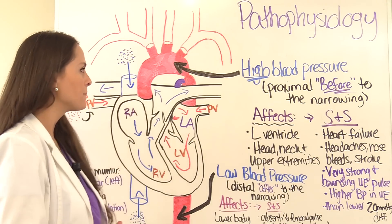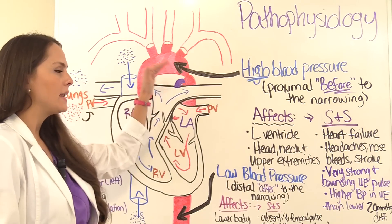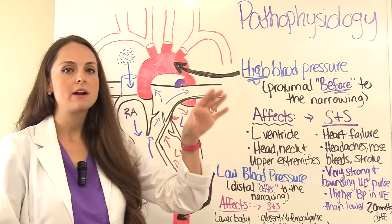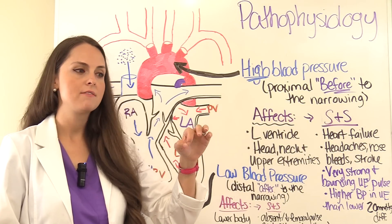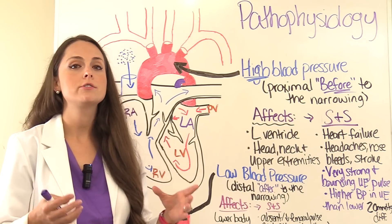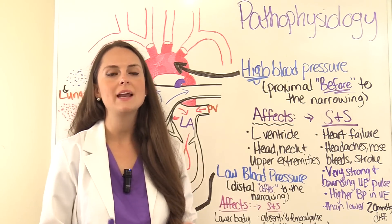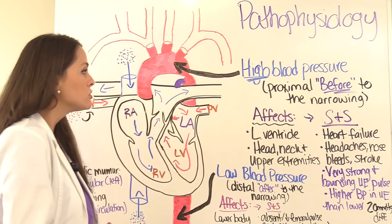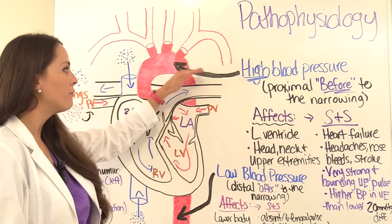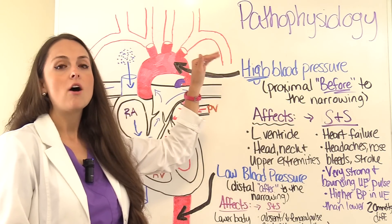When narrowing is present — and it varies in severity and location — let's talk about the most common and severe cases. Before the narrowing, proximal areas are going to experience really high blood pressure. The areas and arteries before the narrowing are affected by that elevated pressure.